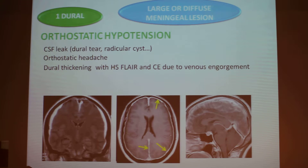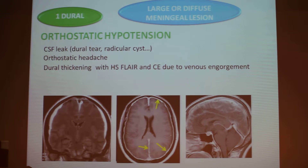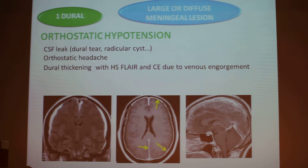When you have a large or diffuse meningeal lesion, what can it be? If it is sterile, think of hypostatic orthostatic hypotension — it is due to a CSF leak. Something like lumbar puncture, trauma, a big arachnoid cyst, or a big cyst developing on the roots. The main symptom is an orthostatic headache — the patient is fine lying in bed but as soon as he gets up, he gets a headache.